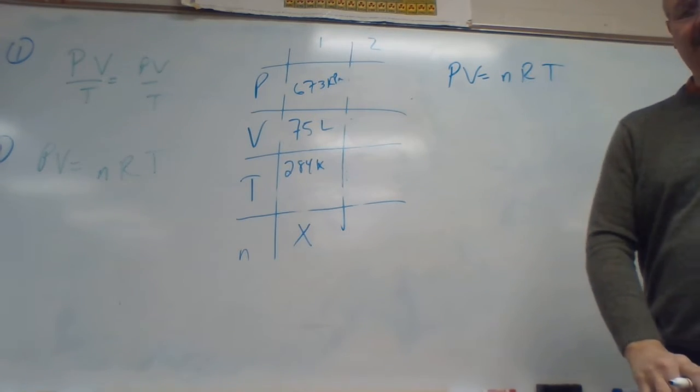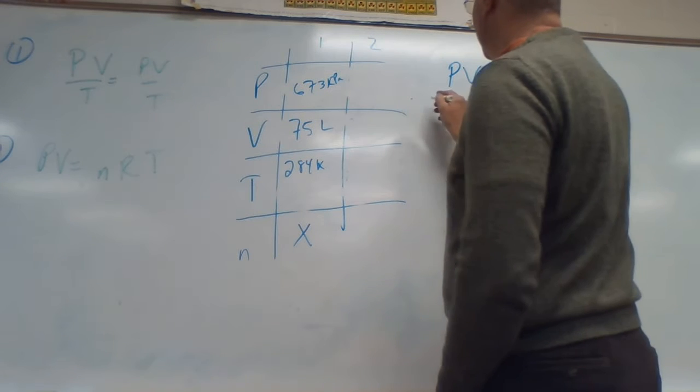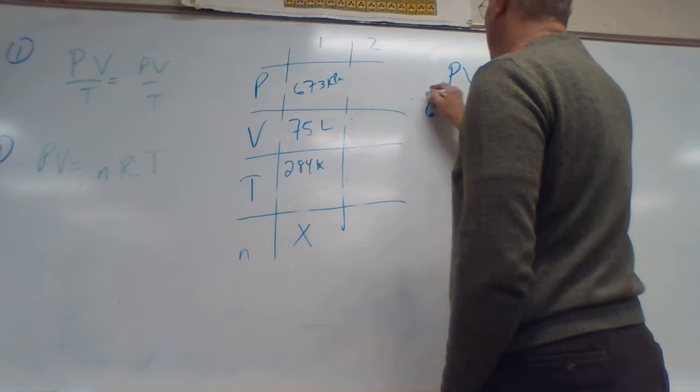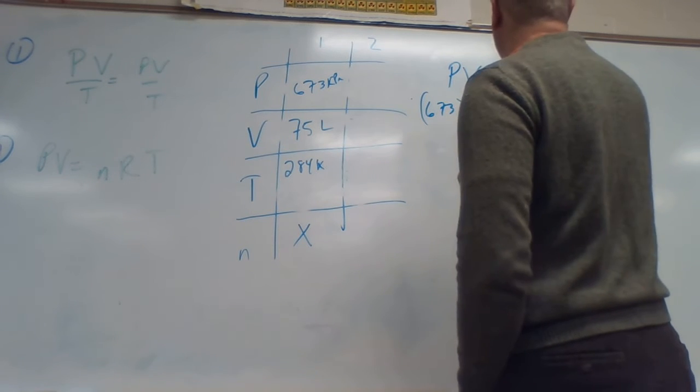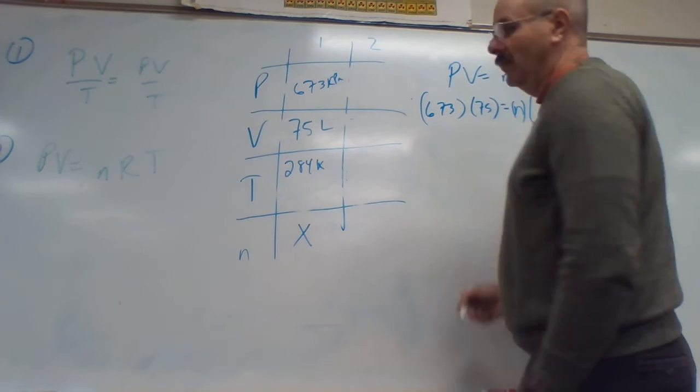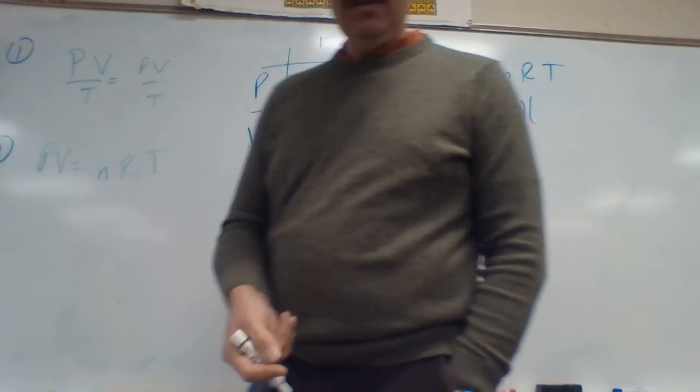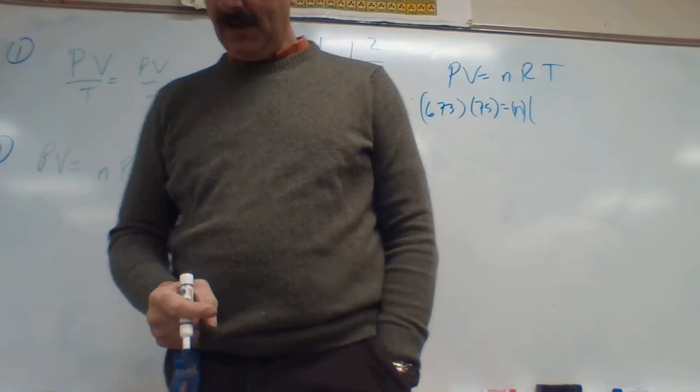All we're going to do is we're going to stick everything in there. So we got pressure 673 times a volume of 75 equals n. Well, that's my X. Oh, what's R?